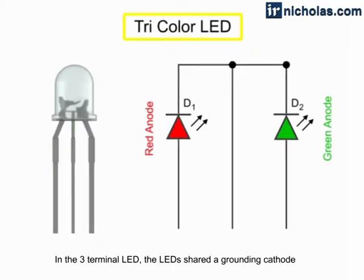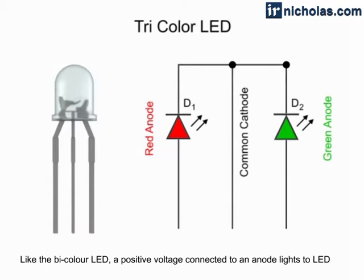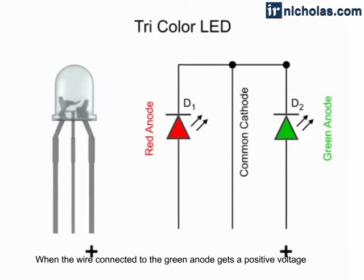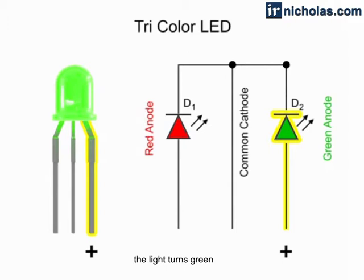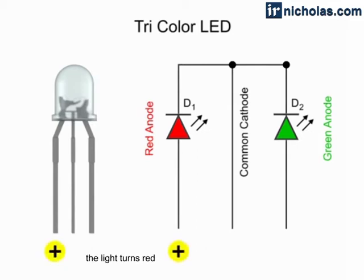In the three-terminal LED, the LEDs share a grounding cathode. Like the bicolor LED, a positive voltage connected to an anode lights the LED. When the wire connected to the green anode gets a positive voltage, the light turns green. When the wire connected to the red anode gets a positive voltage, the light turns red.